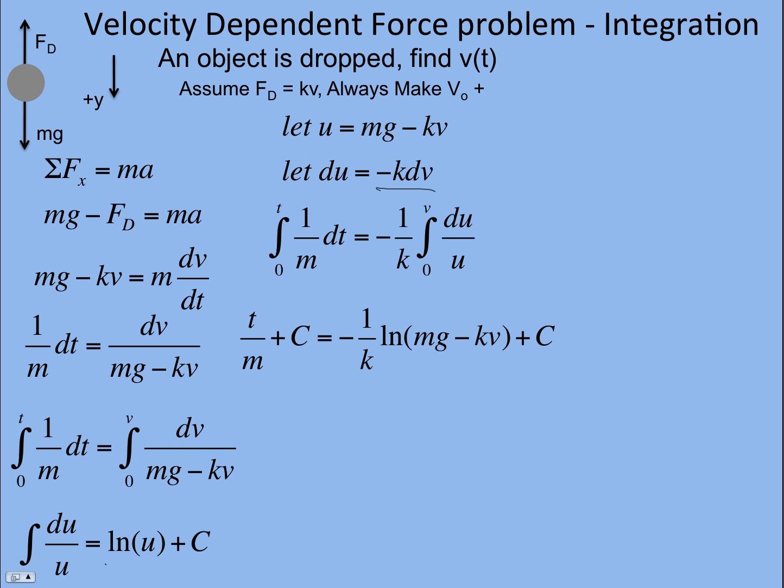So integrating dt just gives me t, and then the m was already there, and then don't forget plus c. And then I have negative 1 over k out in front, and then the answer is the natural log of u, which is natural log of mg minus kv, and also a constant.